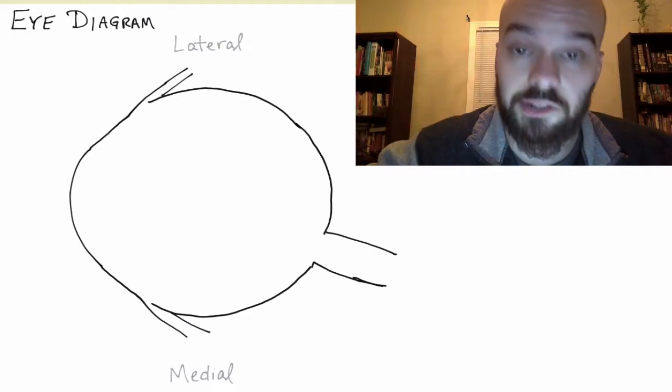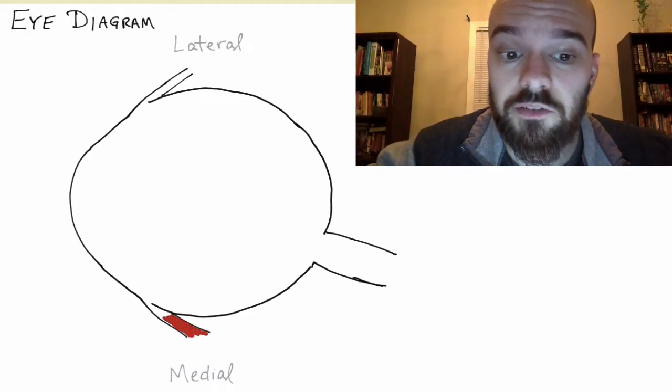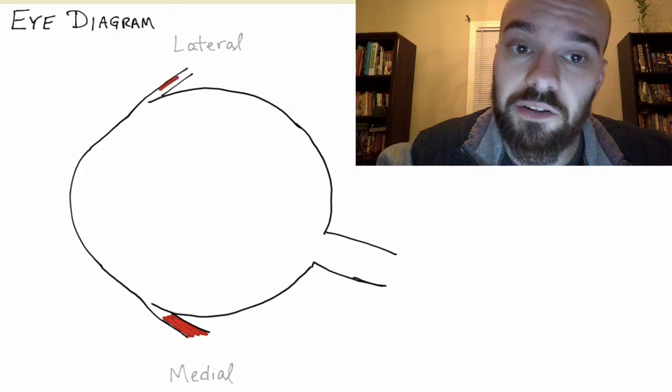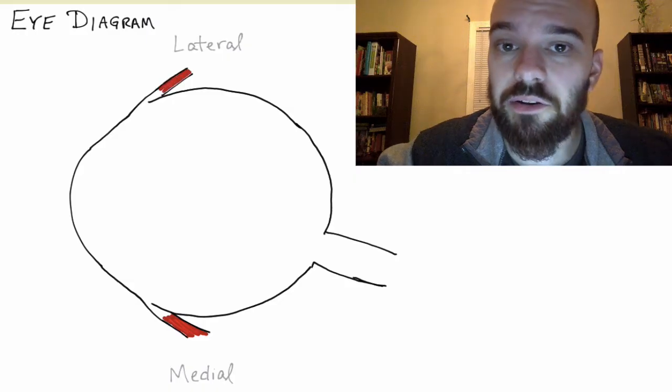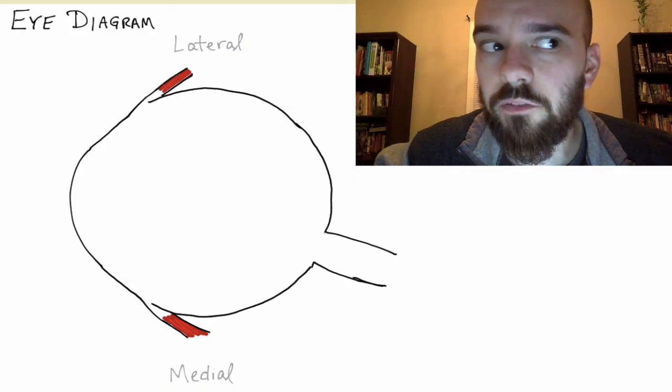First we're going to start with a few muscles. You've got one on the medial side and one on the lateral side of your eye, and those are going to move your eye left and right.